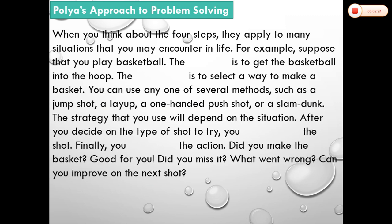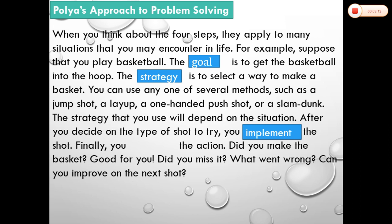When you think about the four steps, they apply to many situations you may encounter in life. For example, suppose that you play basketball. The goal is to get the ball into the hoop. The strategy is to select a way to make a basket — you can use a jump shot, a layup, a push shot, or a slam dunk. The strategy depends on the situation. After you decide on the type of shot, you implement it. Finally, you evaluate the action: Did you make it? Good for you. Did you miss it? What went wrong? Can you improve on the next shot?